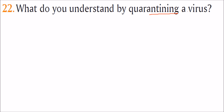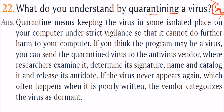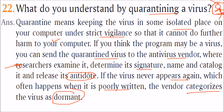What do you understand by quarantining a virus? In a hospital, when someone has a communicable and deadly disease, they are kept in a single room so others are not affected — that is quarantining. Quarantine means keeping the virus in an isolated place on your computer under strict vigilance so it cannot do further harm. If you think a program may be a virus, you can send the quarantined virus to the antivirus vendor, where researchers examine it, determine its signature, name and catalogue it, and release its antidote. If the virus never appears again — often because it was poorly written — the vendor categorizes it as dormant.